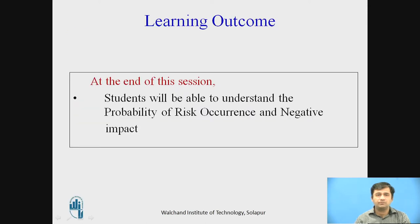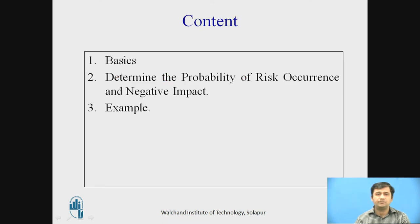Learning Outcome: At the end of this session, students will be able to understand the probability of risk occurrence and its negative impact with example. The contents covered are: first, the basics; second, Step 2 and 3 — determining the probability of risk occurrence and its negative impact; and finally, the example.